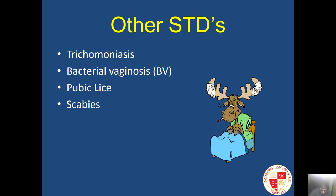Pubic lice, also known as crab lice, can also be transmitted sexually. Scabies is a contagious skin infection caused by a tiny mite that burrows under the host's skin, causing intense itching, most often transmitted by direct skin-to-skin contact with higher risk from prolonged contact. A neat line of four or more closely placed mosquito-like bites is almost a diagnosis for the disease.